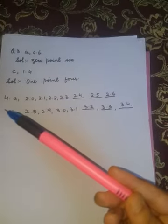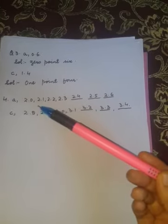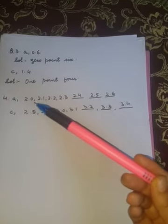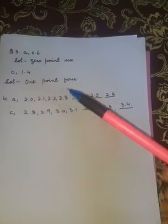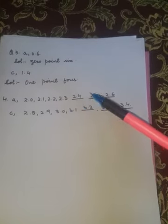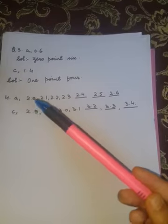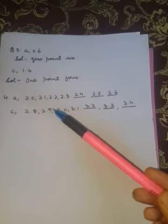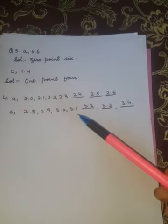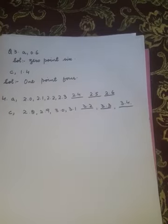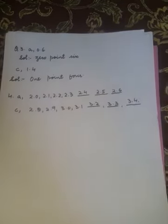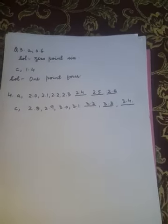After that Question Number 4, you have to complete the table: 2.0, 2.1, 2.2, 2.3, then 2.4, 2.5, 2.6. B part you will do yourself. C part is 2.8, 2.9, 3.0, 3.1, 3.2, 3.3, 3.4. And D part also you will do yourself.